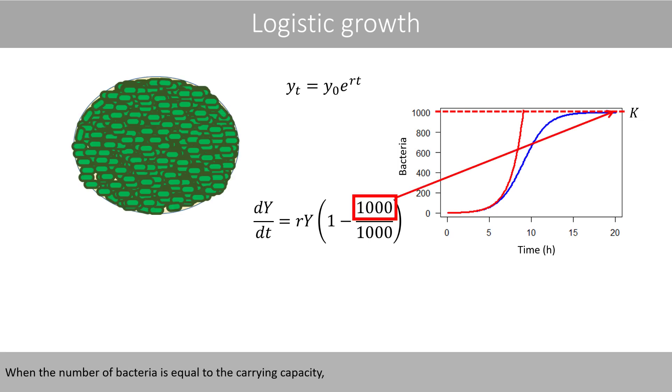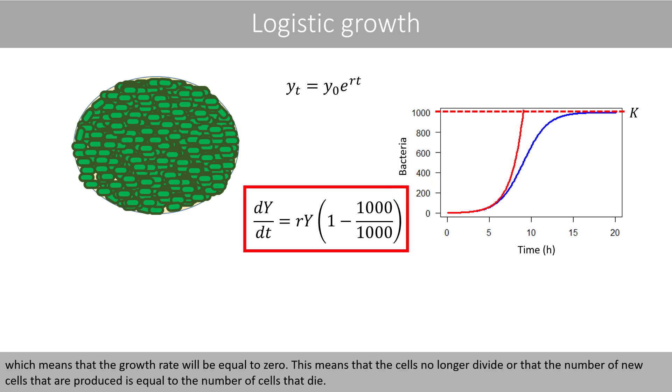When the number of bacteria is equal to the carrying capacity, the value inside the brackets is equal to zero, which means that the growth rate will be equal to zero. This means that the cells no longer divide, or that the number of new cells that are produced is equal to the number of cells that die.